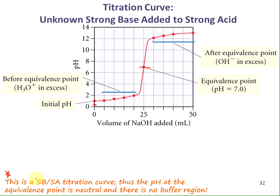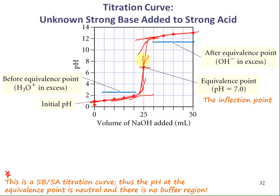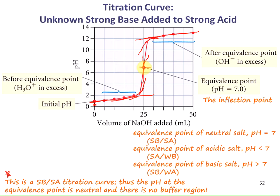To help us find the equivalence point on this titration graph, typically you draw tangent lines through the curve — the midpoint between these tangent lines is where your equivalence point is going to be. If you've taken calculus, if you take the tangent of these lines, you get a switchover of your tangent line where you get a maximum value of your first derivative curve. This is how you know where the equivalence point is — at the inflection point where the first derivative reaches its maximum.